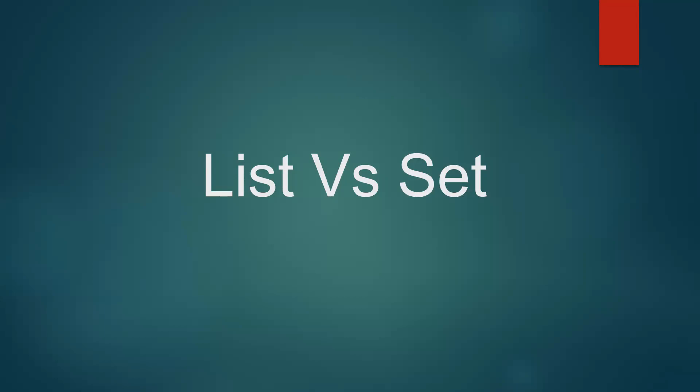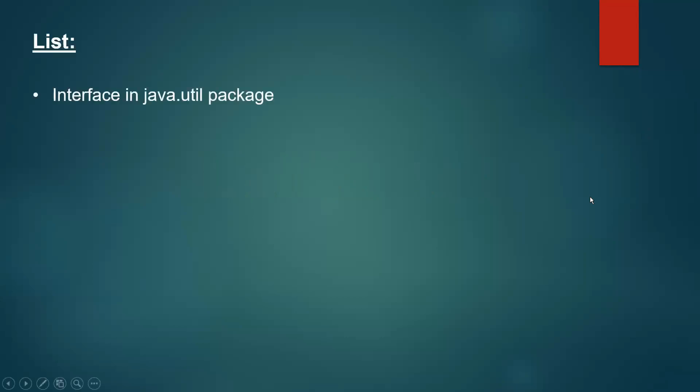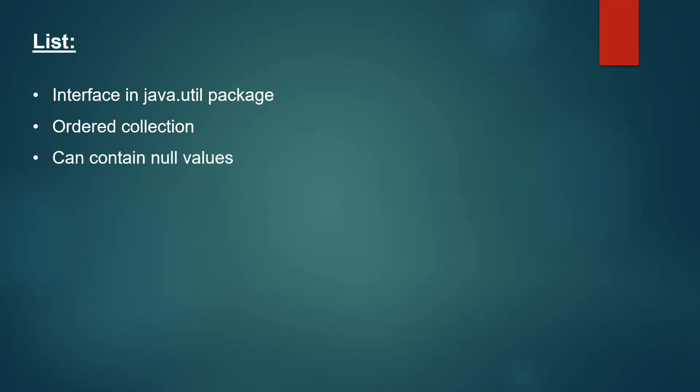Both list and set are interfaces in Java which are part of the collections framework. List is an interface present in the java.util package. List is an ordered collection, meaning whenever we add elements to a list, when we read the elements back it follows the order of insertion. List can contain null values and duplicate values as well.